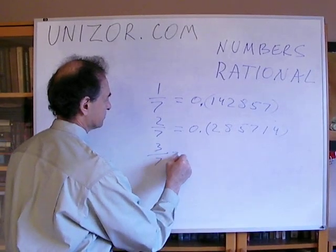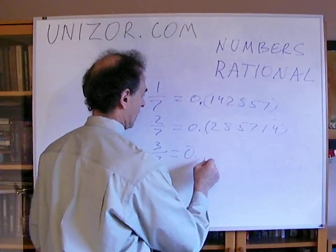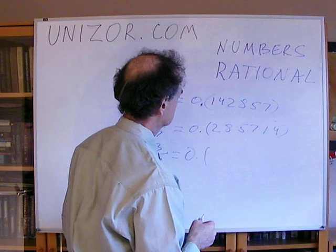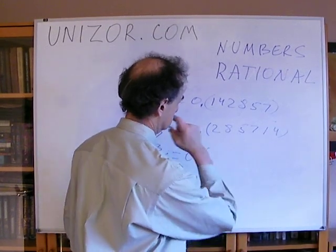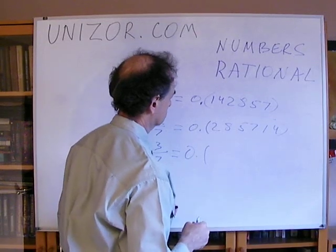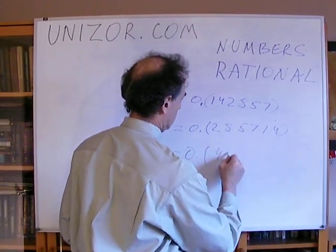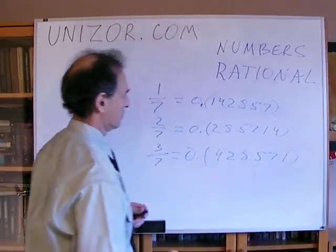Three-sevenths will be, you start from four, I think. Is that right? Or from five? From four. 0.428571. Yeah, that's what it will be.